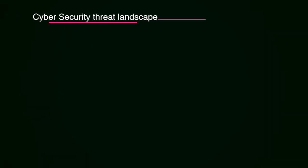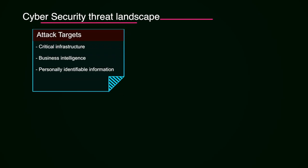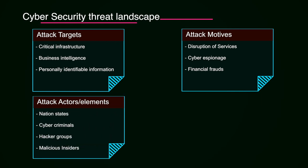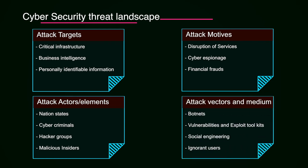The cyber security threat landscape is dynamic in nature and evolving and changing on a daily basis. Attack targets include the critical infrastructure of nations, business intelligence, and PII — personally identifiable information of individuals. Attack motives include disruption of services in critical infrastructure like energy blackouts, cyber espionage, taking out confidential sensitive information from organizations, and financial frauds. Attack actors conducting these attacks include nation states, cyber criminals, hacker groups, and sometimes malicious insiders. Attack factors and mediums used are botnets, vulnerability and exploit toolkits, social engineering techniques, and ignorant users.